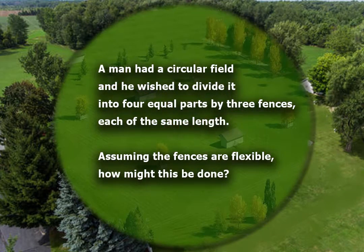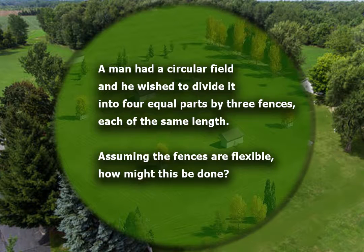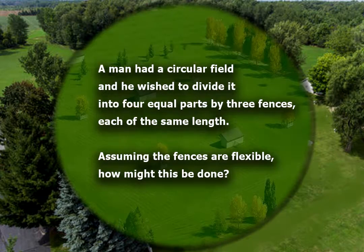A man had a circular field, and he wished to divide it into four equal parts by three fences, each of the same length. Assuming the fences are flexible, how might this be done?